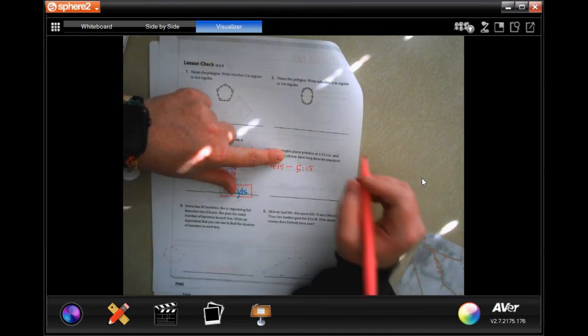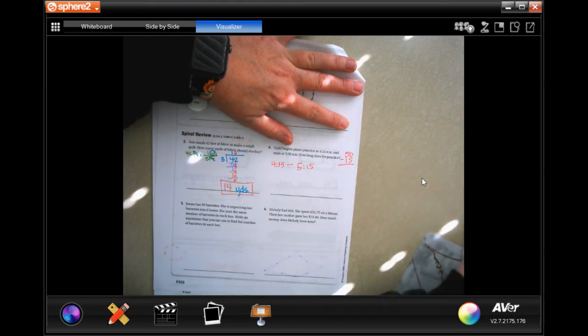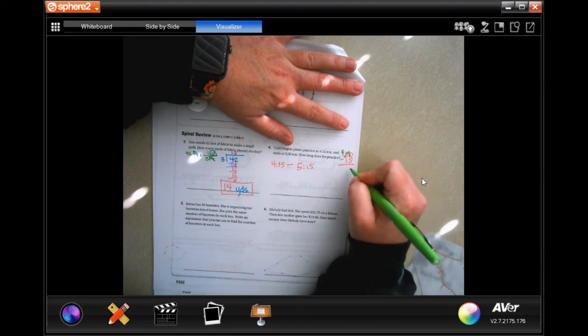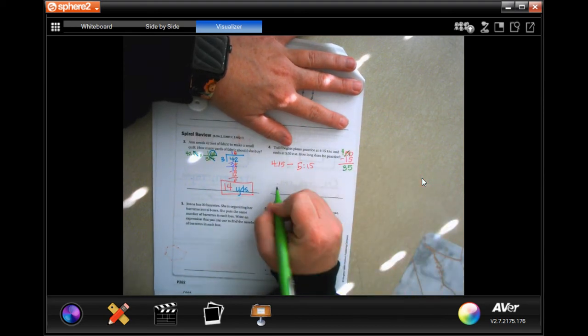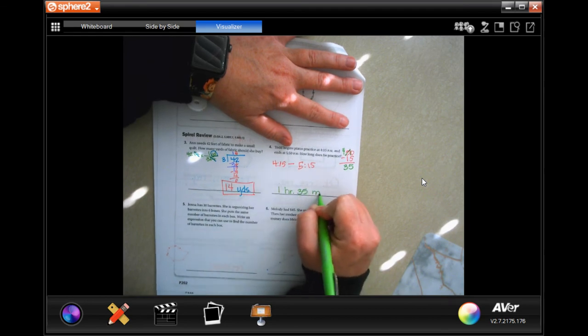Then it goes another - let's do 50 minus 15. Ten minus five is five, four minus one is three - so another 35 minutes. So it'll be one hour 35 minutes.